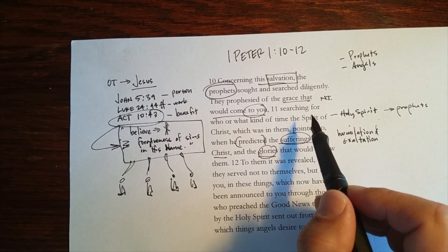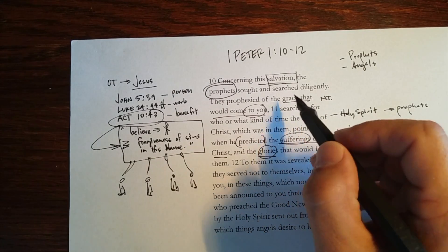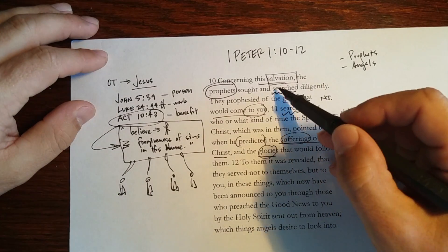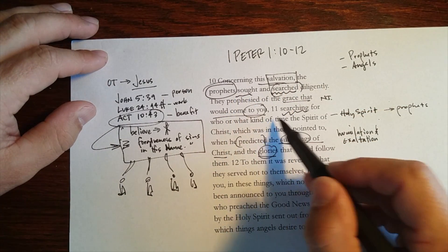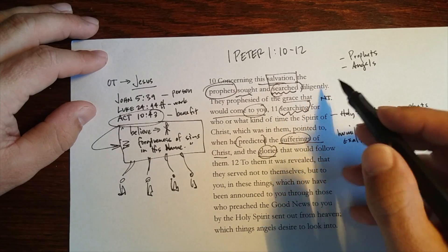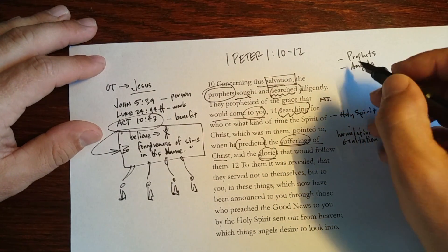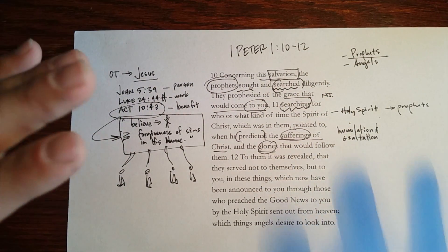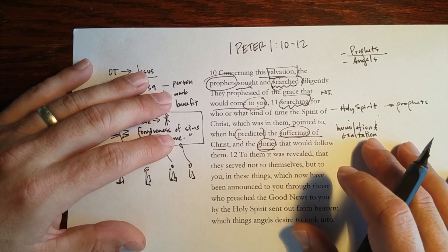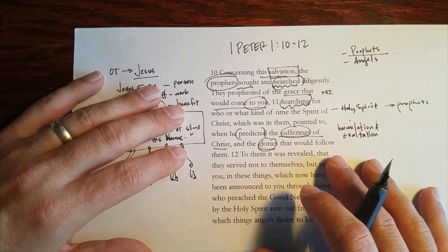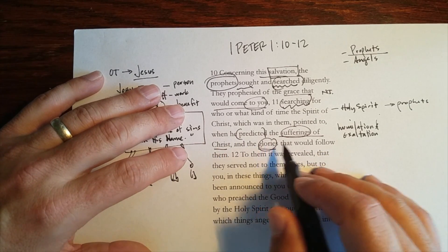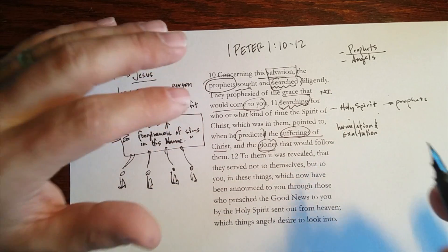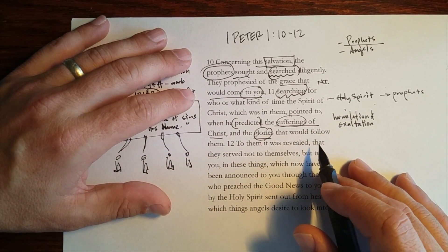Now look at what the word that comes up twice already in the text, and that is this word, searched. They searched, sought and searched diligently, searching for what kind of time the Spirit. That the prophets were particularly interested. They were engaging in study of the Scriptures that went before them and of the Spirit of Christ, the Holy Spirit who was predicting and speaking through them and preaching through them. They were intent on these sorts of things.